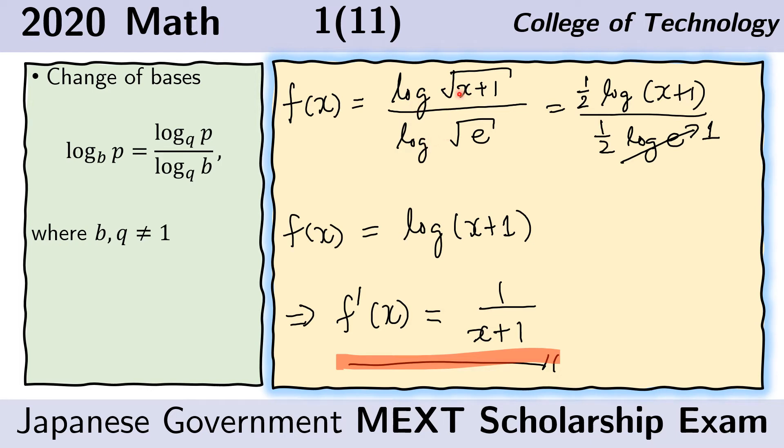Now we can further simplify the numerator and the denominator. The numerator now becomes like this. We can remove the radical sign and multiply the logarithm by one half. In the denominator, we can also do the same. And because log here is a natural logarithm, the log of E is just 1. So the one half here cancels with the one half here. We are left with this as our f of x.